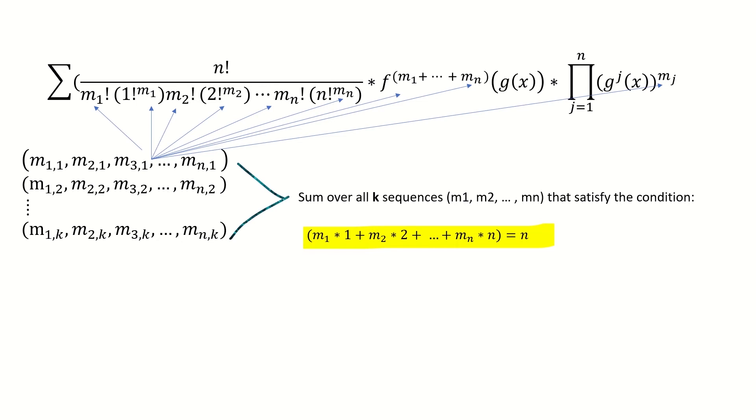Again, instead of letting our index travel from a set of integers as we sum, say from 1 to 5, our index travels a set of sequences of numbers, so we will plug in entire sequences of numbers m1 through mn into our expression for Faa di Bruno's formula and add up the results from those sequences to get our final answer.